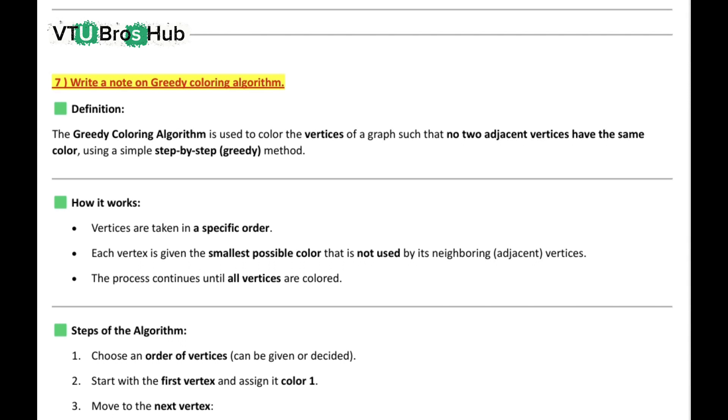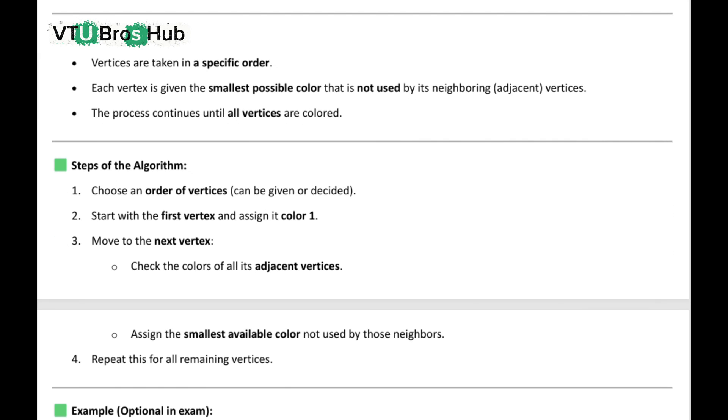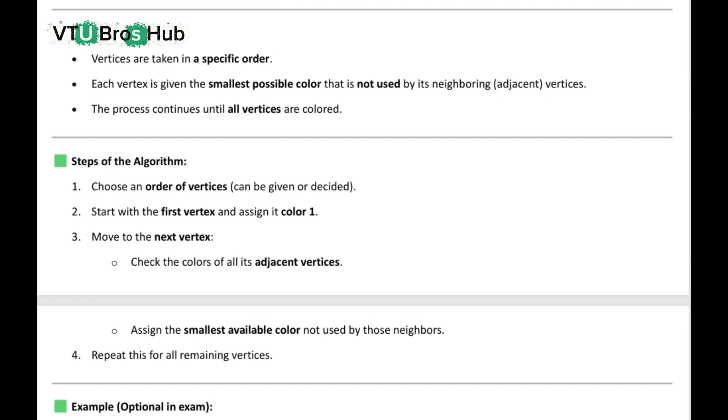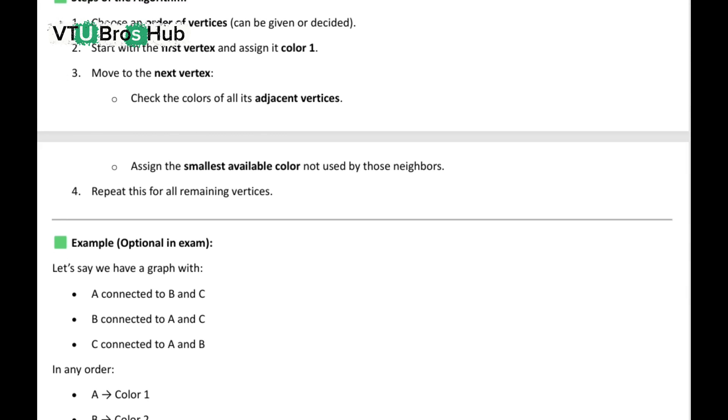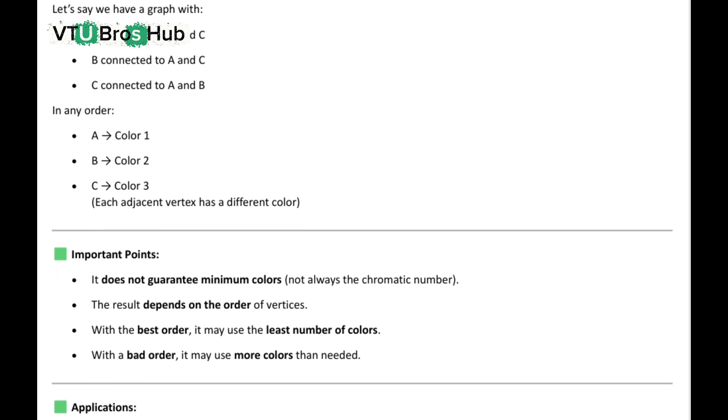Steps are: step one, choose an order. Step two, start with color one. Step three, for each vertex, pick the lowest color not used by neighbors. The diagram on screen shows an example. A triangle graph with A, B, and C is colored step by step.